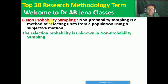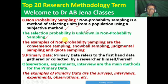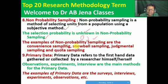Opposite of probability sampling is non-probability sampling. Non-probability sampling is a method of selecting units from a population using a subjective method. The selection probability is unknown in the case of non-probability sampling. Examples of non-probability sampling are convenience sampling, snowball sampling, judgmental sampling, and quota sampling. I have already discussed these with suitable examples in a posted video.